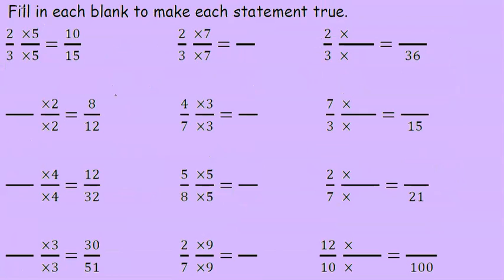Fill in each blank to make each statement true. So we have our example, two over three. If you multiply those each by five, you get ten-fifteenths. If we multiply two by seven, we get fourteen. Three by seven, we get twenty-one. These are equivalent fractions.